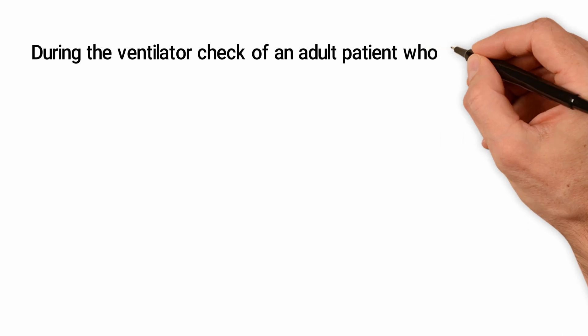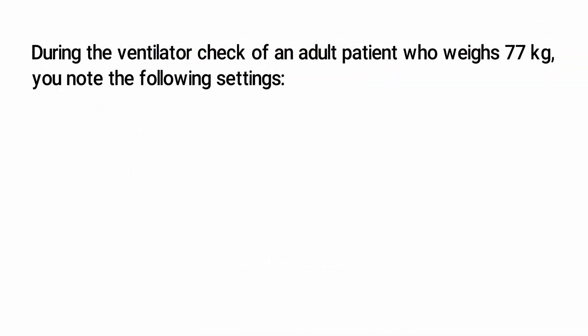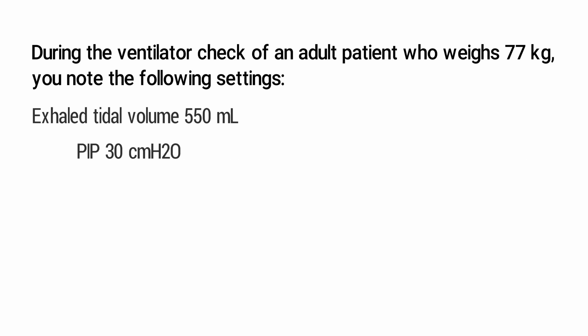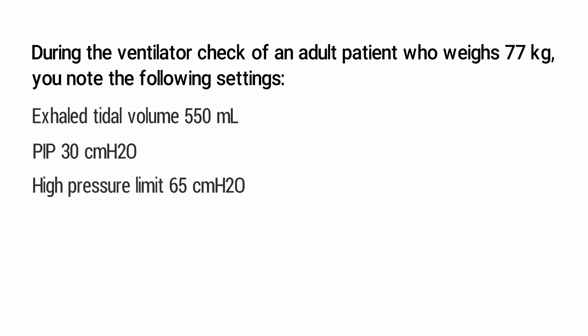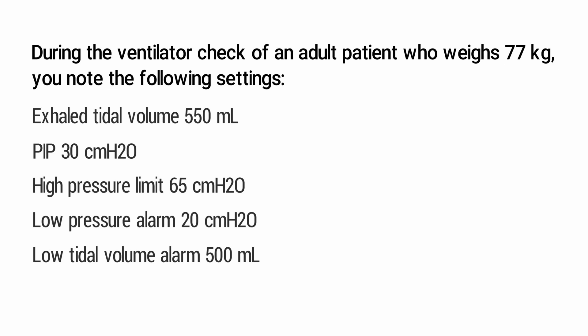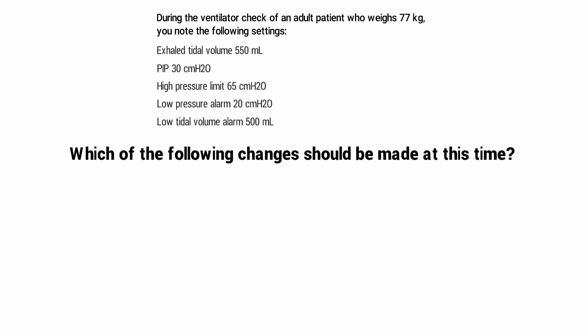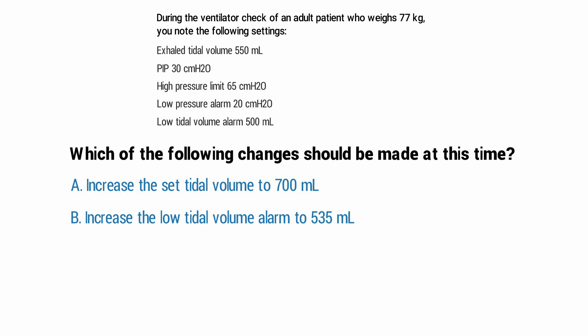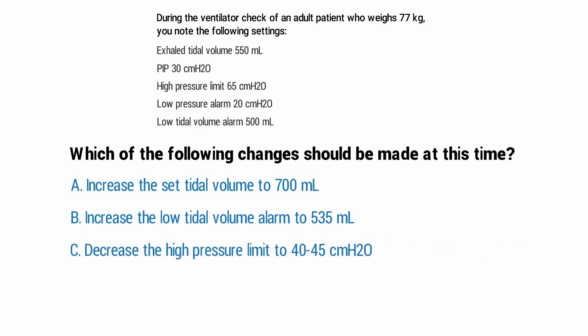During the ventilator check of an adult patient who weighs 77 kilograms, you note the following settings: an exhaled tidal volume of 550 milliliters, peak inspiratory pressure of 30, high pressure limit of 65, low pressure alarm of 20, and a low tidal volume alarm of 500 milliliters. Which of the following changes should be made? A. Increase the set tidal volume to 700 milliliters. B. Increase the low tidal volume alarm to 535 milliliters. C. Decrease the high pressure limit to 40 to 45 centimeters of water pressure. Or D. Decrease the low pressure alarm to 10 centimeters of water pressure.